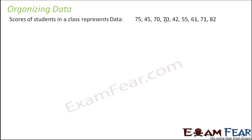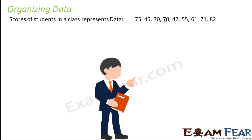So now we talk about organizing data, because with haphazard data we really go nowhere — we are unable to analyze the data properly. Therefore, here we will see how better we can organize data. Let's say the data given is the scores of students in a particular class: 75, 45, 70, 70, 42, 55, 61, 71, 82 — these are the marks obtained by various students. The teacher has been asked to organize this data so he can answer questions like who scored maximum, who scored minimum, and what was the overall performance of the class. Because looking at this given data on the screen, it is very difficult for the teacher to handle it.